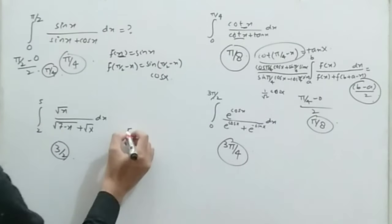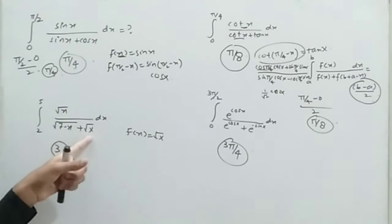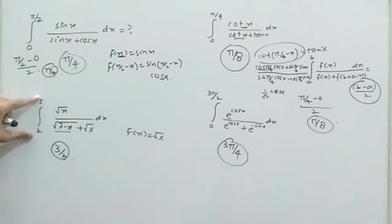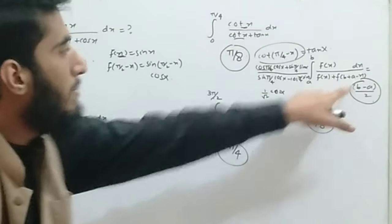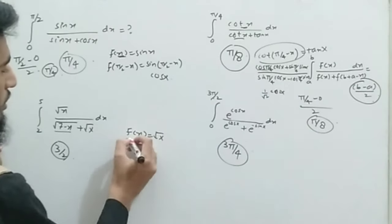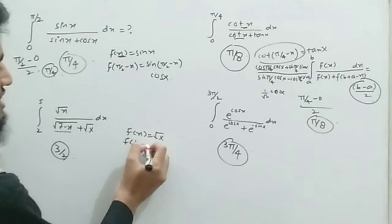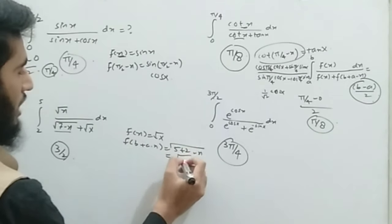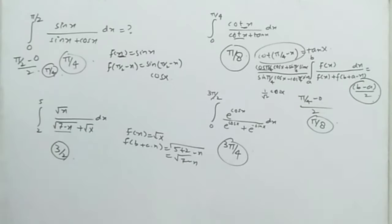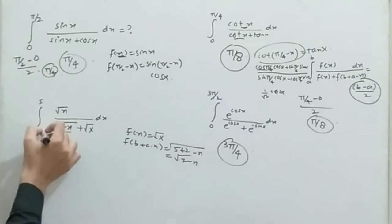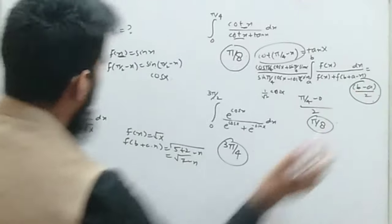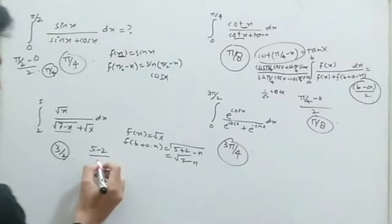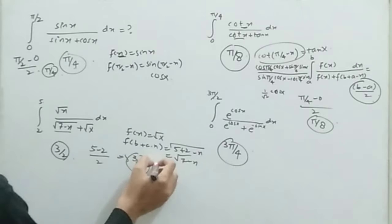Now look at the third integral. We have a function f(x) = √x in the numerator and the same function in the denominator. We add the limits according to the formula b plus a, so f(b + a − x) = √(5 + 2 − x) = √(7 − x), which is present in the denominator. Using the formula b minus a divided by 2: (5 minus 2) divided by 2 gives us the required answer of 3/2.